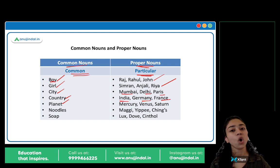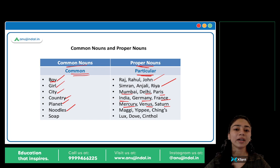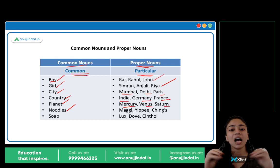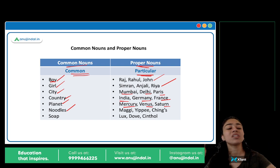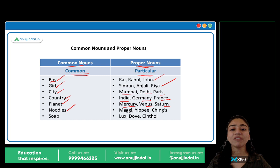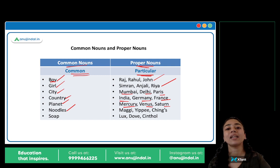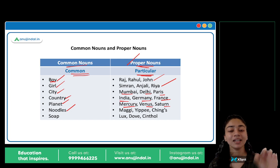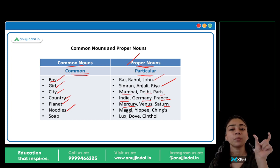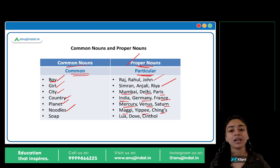Planet is common, lekin Mercury, Venus, Saturn — yeh proper nouns hain. Noodles — agar main aapse bolun ki go to the supermarket and get a packet of noodles, toh aap ja kar koi bhi random brand ka packet loge, because mainne specify nahin kiya hai. I have not mentioned any specific brand name. Toh noodles common hai. Lekin if I tell you to get a packet of Maggi — mainne kisi specific brand ka naam liya hai. Joh bhi brand names hote hain, woh hamare proper nouns hain. I am talking about a specific brand, a particular name.